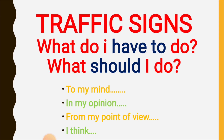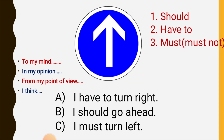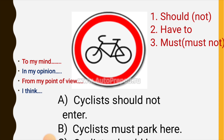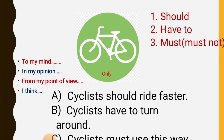What is traffic? What are traffic signs? What do I have to do? What should I do? B — I should stop. B — I should go ahead. B — I shouldn't take a U-turn. C — cyclists must use this way.